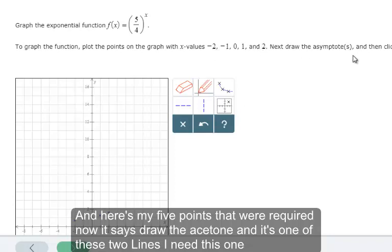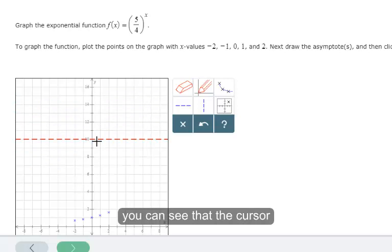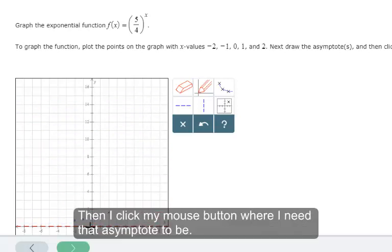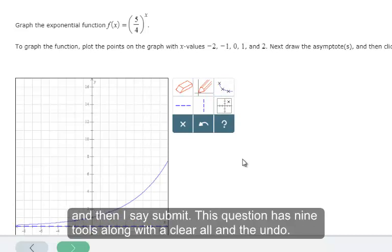And here's my five points that were required. Now it says draw the asymptote. And it's one of these two lines. I need this one. If I move this, you can see that the cursor drags my asymptote to where I need it. Then I click my mouse button where I need that asymptote to be. To finish the graph, I need to click on the connect the dots button. And it graphs it for me. And then I say submit.